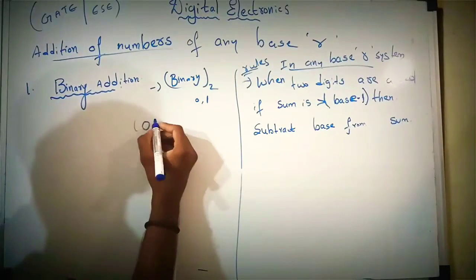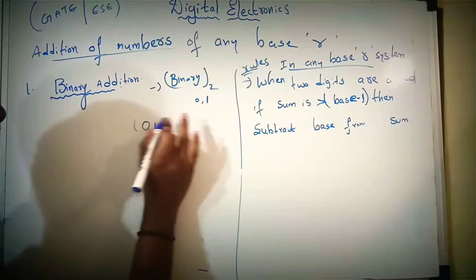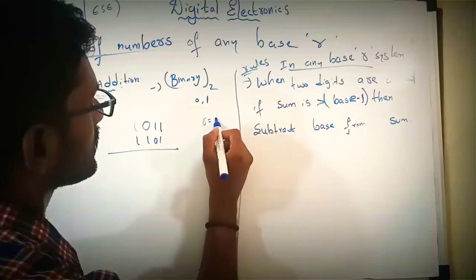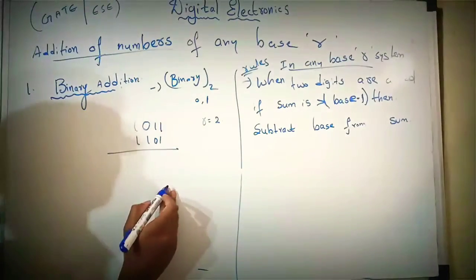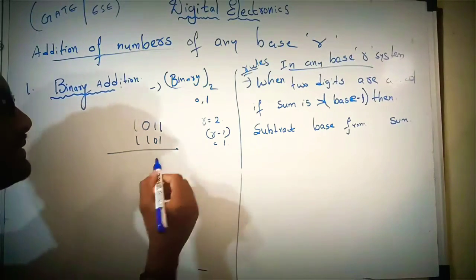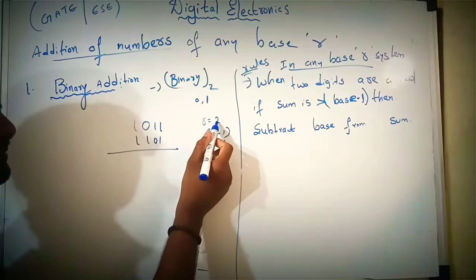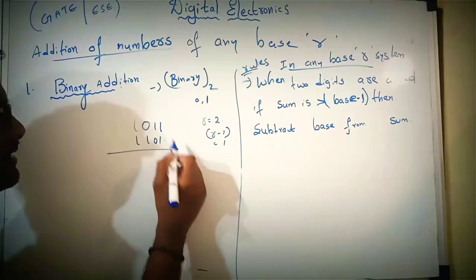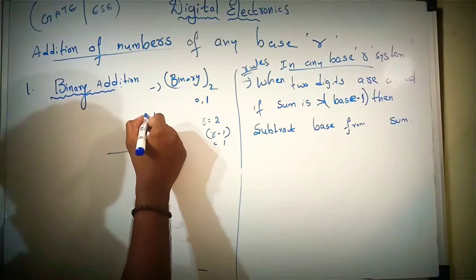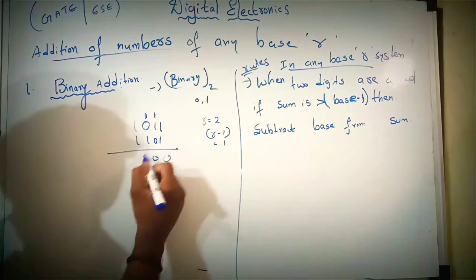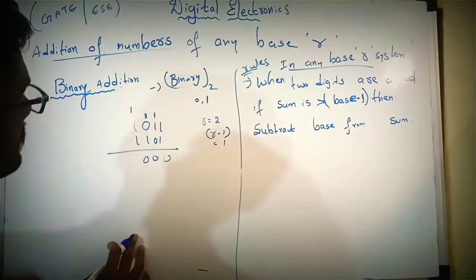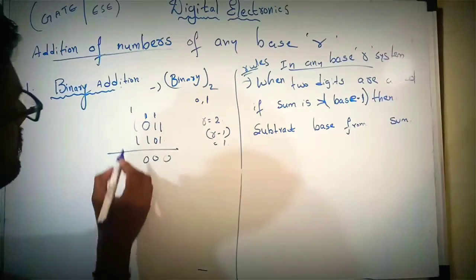Let's take another example. It is base 2, base r equal to 2. 1 plus 1 is 2. Here the sum is greater than base minus 1. So subtract 2 from this sum: 2 minus 2 is 0. You will get carry. 1 plus 1 is 2, 2 minus 2 is 0, you will get carry as 1. Again 1 plus 1 is 2, 2 minus 2 is 0, you will get carry as 1. 1 plus 1 is 2, then 2 plus 1 is 3.